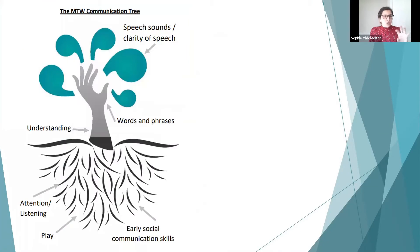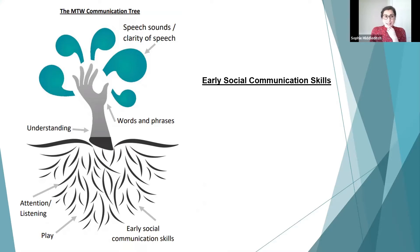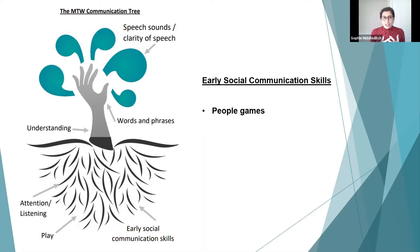I'll keep the communication tree on screen for reference as I talk through each element and how strategies can help at each level. For early social communication skills, we can use people games — things like peekaboo — which add an element of fun and a to-and-fro with someone. You've also got intensive interaction, where you copy someone's behaviours, actions, and sometimes noises, which really helps get you on their level of communication.